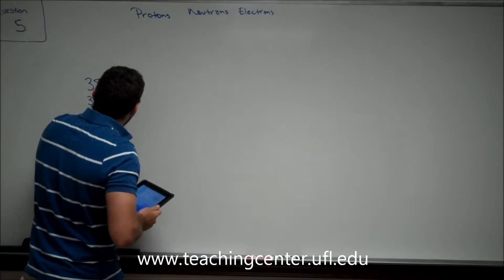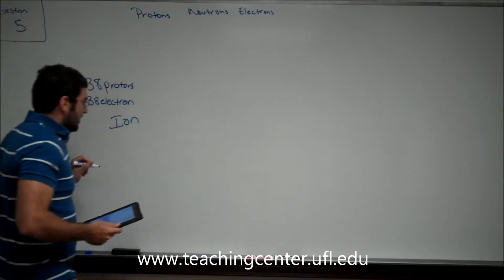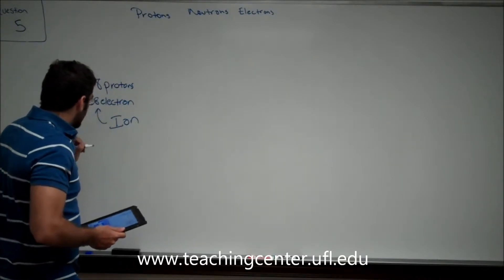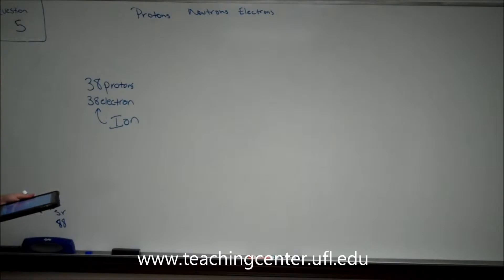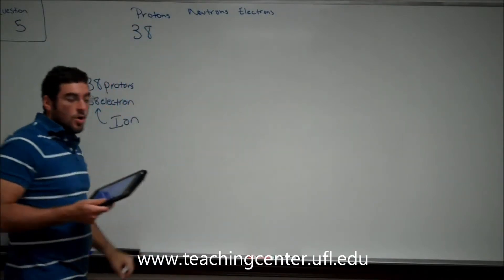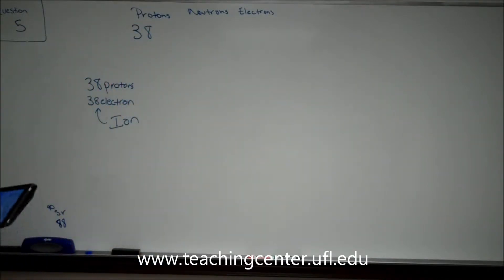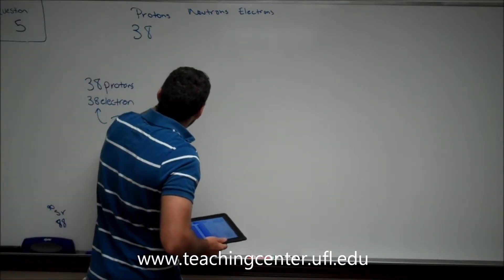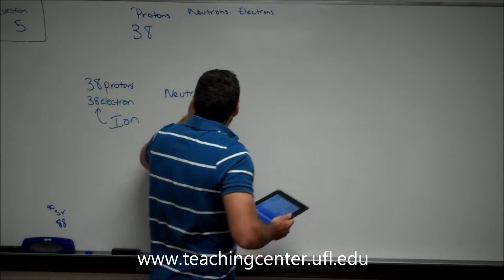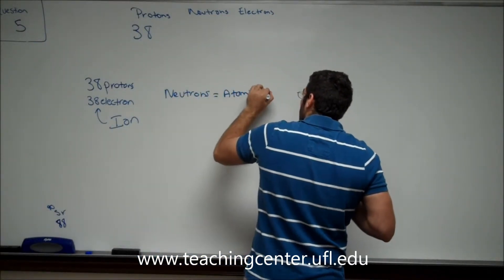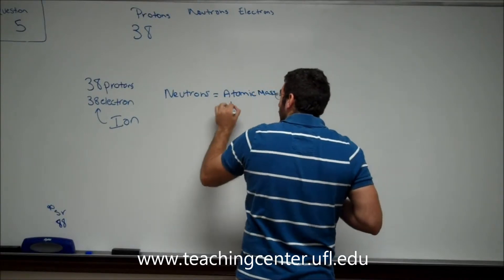But when we're talking about an ion, that means your electron numbers are going to change. Now, we know right away that we have 38 protons. How do we typically find the number of neutrons? Neutrons equals the atomic mass minus the proton number, or the atomic number.